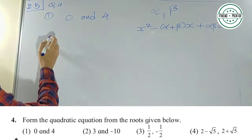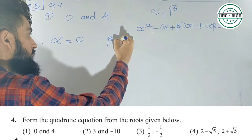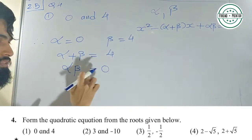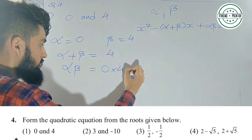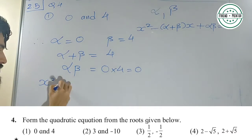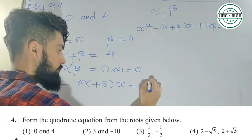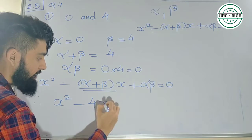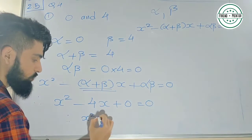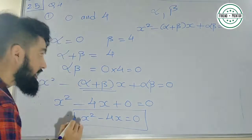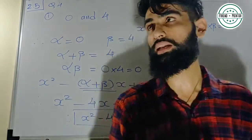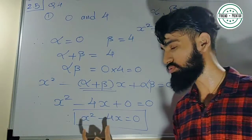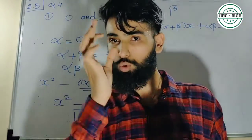Yahan pe unhone de diya hai: 0 and 4 are the roots. Therefore value of alpha is 0, value of beta is 4. Alpha + beta = 4. Alpha × beta = 0 × 4 = 0. Ab ye dono values ko equation me rakhenge: x² − (α + β)x + αβ = 0. Therefore quadratic equation is x² − 4x + 0 = 0, so x² − 4x = 0. Ek chota sa note: jab ek root 0 milta hai, constant term nahi dikhta — sirf x² aur minus 4x dikhta hai.